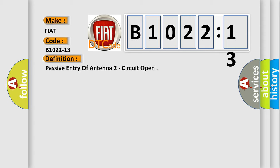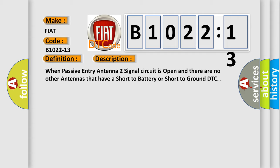And now this is a short description of this DTC code. When passive entry antenna two signal circuit is open and there are no other antennas that have a short to battery or short to ground DTC.